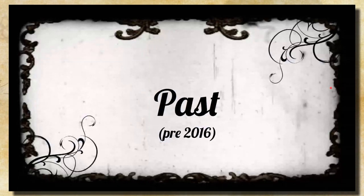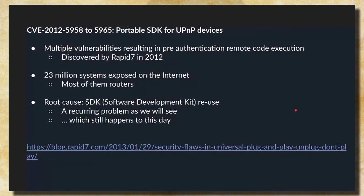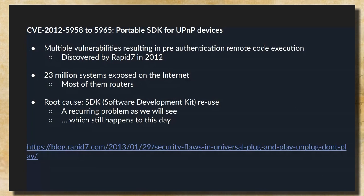Let's start by talking about the past — before 2016. Starting with CVE-2012-5958 to 5965, this is a bunch of vulnerabilities in a portable SDK for UPnP devices. These are multiple vulnerabilities that result in pre-authentication remote code execution. They were discovered by Rapid7 in 2012. The result: 23 million systems were exposed on the internet, most of them routers. The root cause is software development kit reuse, and we'll see this is a recurring problem.